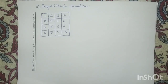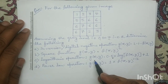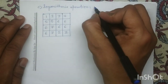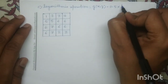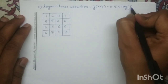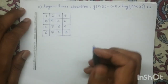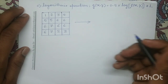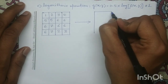Next we will perform the logarithmic operation. The mathematical equation of the logarithmic operation is g(x,y) equals 0.5 multiplied by log of f(x,y) plus 1. We will apply this transformation equation on this given input image. Since the dimension of the input image is 4×4, the output image dimension is also 4×4.